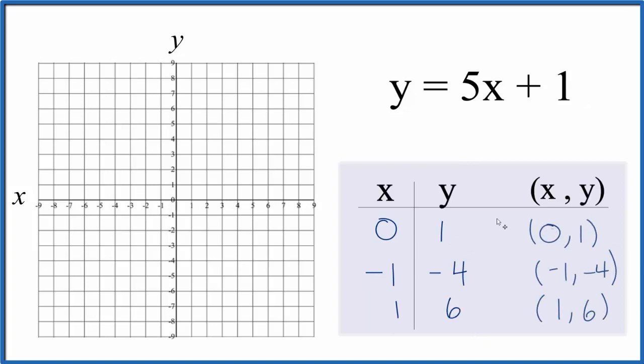So these are the points we'll graph for the linear equation y equals 5x plus 1. We have x is 0 and y is 1, so x is 0 is right here and y is 1 right here. How about our negative 1, negative 4? x is negative 1 and we go down to negative 4 for y.